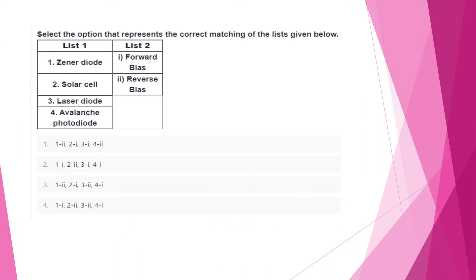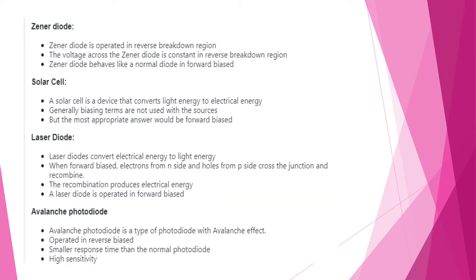Solar cell is forward biased. Laser diode is reverse biased — that's when the reverse wave angle applies. The PIN diode is also mentioned here. You can change the case based on specific points.